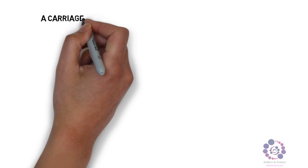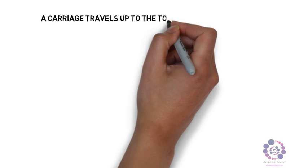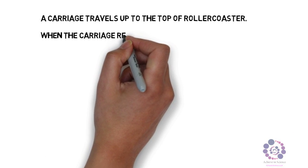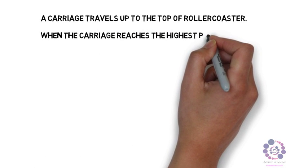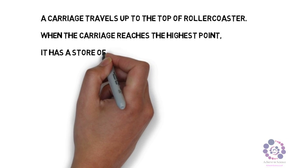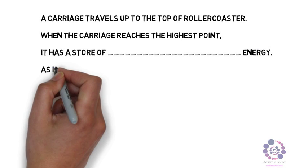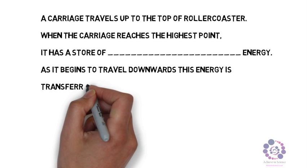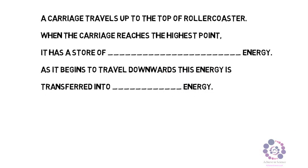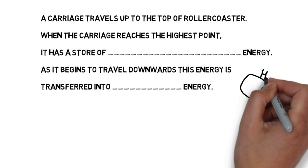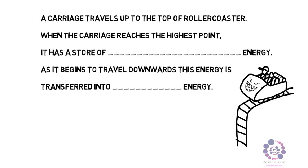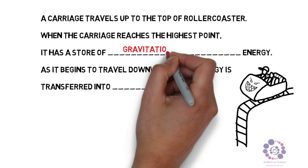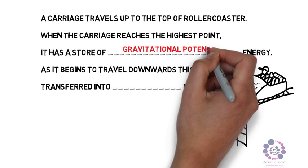A carriage travels up to the top of a roller coaster. When the carriage reaches the highest point, it is a store of what type of energy? As it begins to travel downwards, the energy is transferred into some other form of energy. At its highest point, it will have a store of gravitational potential energy. And as it begins to travel downwards, this energy is transferred into kinetic energy.